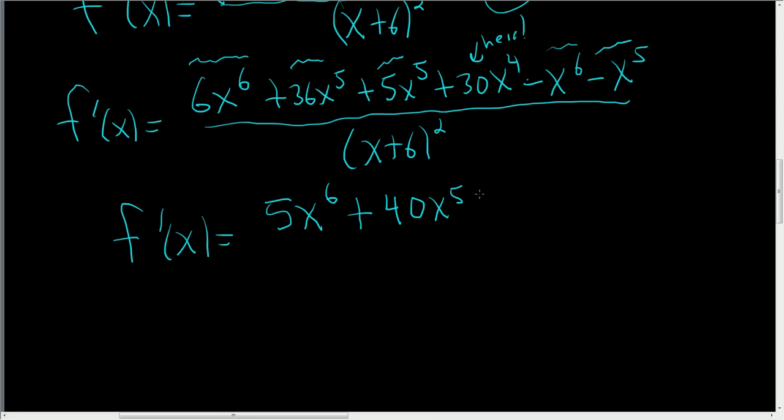Here it is. That's it. So plus 30x to the fourth. And all of this is being divided by x plus 6, and the whole thing is squared. So that is the answer.